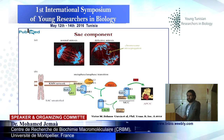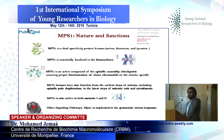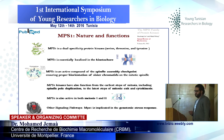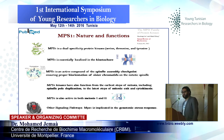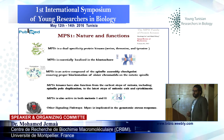The SAC is composed of several proteins, like BubR1, MAD2, and Bub1, but also — maybe my favorite — the MPS1 protein. MPS1 is a dual specificity protein kinase, essentially localized at the kinetochore. MPS1 is an active component of the Spindle Assembly Checkpoint and ensures proper orientation of sister chromatids in the mitotic spindle. MPS1 kinase has also functions from the earliest step of mitosis, including spindle pole duplication, to the latest step, cytokinesis. MPS1 is also active in both meiosis 1 and 2, and has other roles in signaling pathways like the genotoxic stress response.